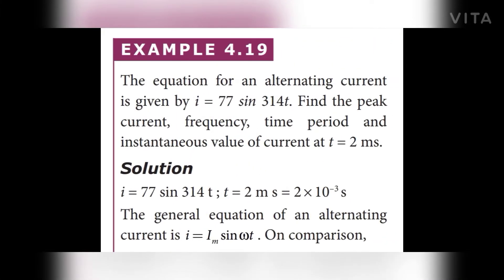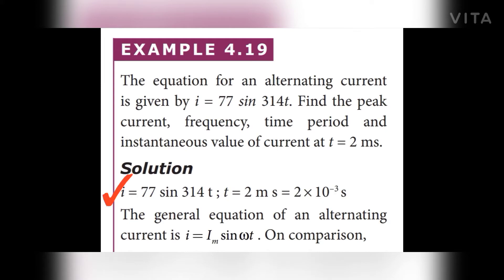Now the next example: Example 4.19. The equation for an alternating current is given by i = 77 sin(314t). Find the peak current, frequency, time period, and instantaneous value of current at t = 2 milliseconds. Given: the equation i = 77 sin(314t), and t = 2 milliseconds.